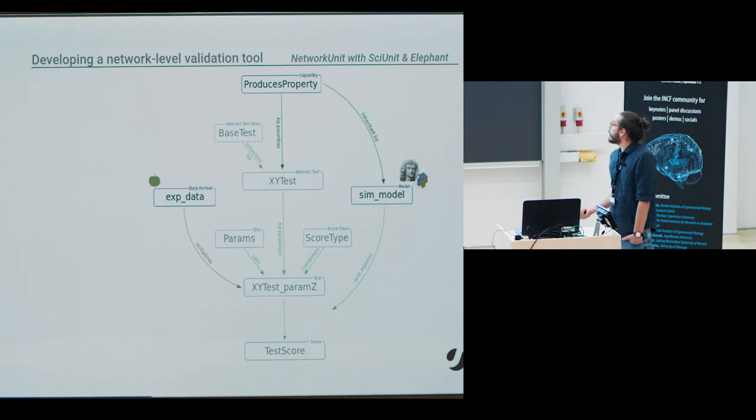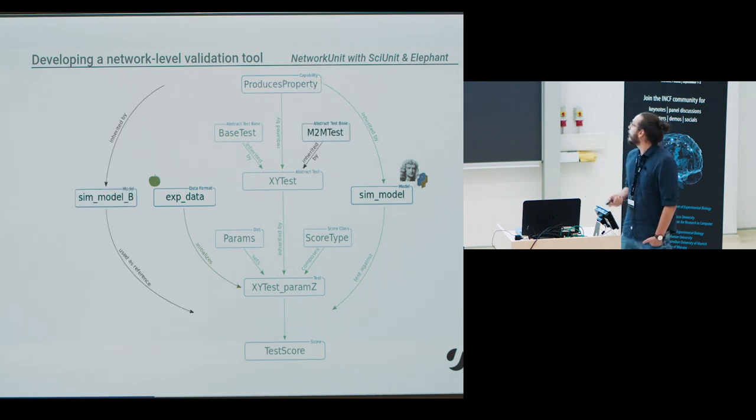And indeed, this framework proves versatile enough to also incorporate the practice of validating one model with another model. So, simply by inheriting one dedicated test class, we can use the same test to not test against data, but against model. And the test is actually formally equivalent. For our apple example, this could be, for example, a relativistic model of motion. And here we can identify the limitations of Newton's law without having to actually measure super-fast apples.